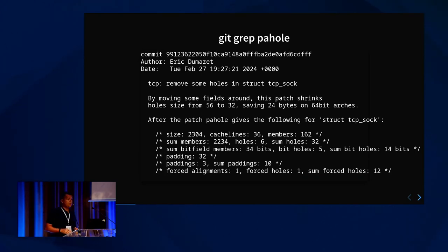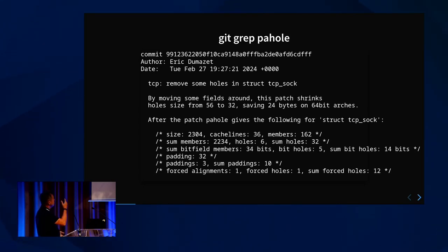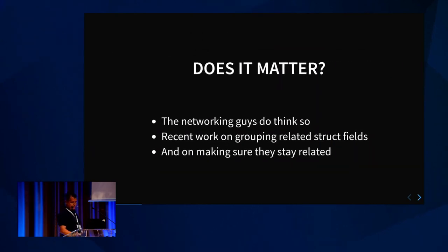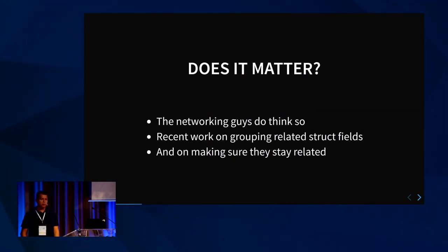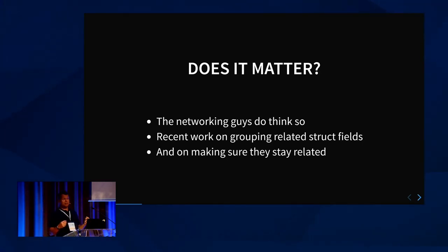People have been doing this. If you do a 'git grep pahole' or 'git grep last cache line', you'll see it's not something that happened at some point and stopped. This year Eric Dumazet was moving things around to reduce the size of struct TCP sock. The people at Google did work on making this grouping of fields easier to perform and to make sure people afterwards won't mess with it — there are build-time assertions that will stop the build if you mess with those cache line groups.